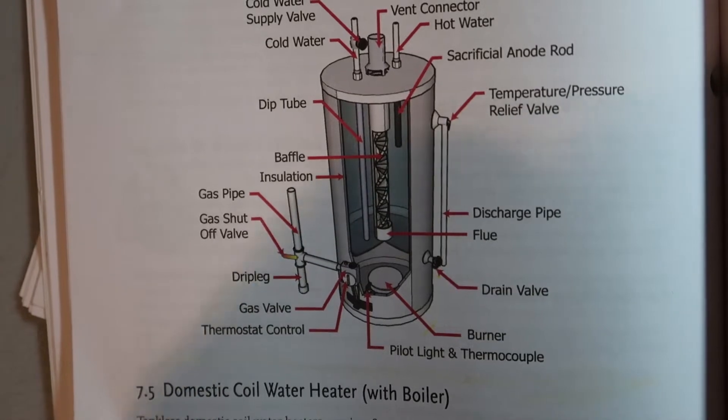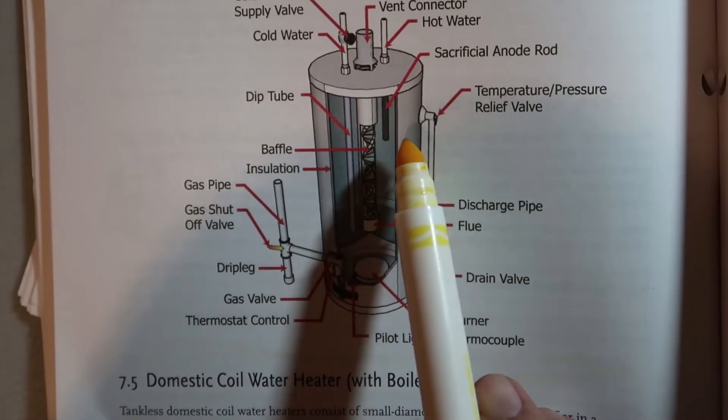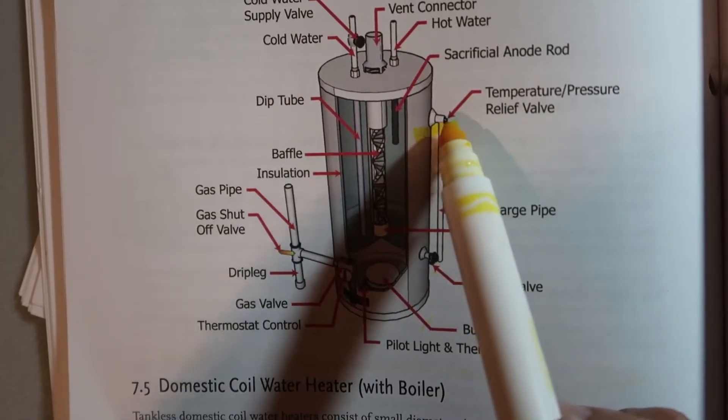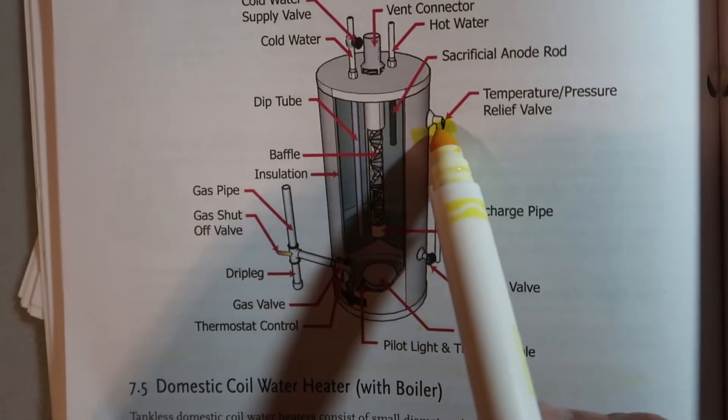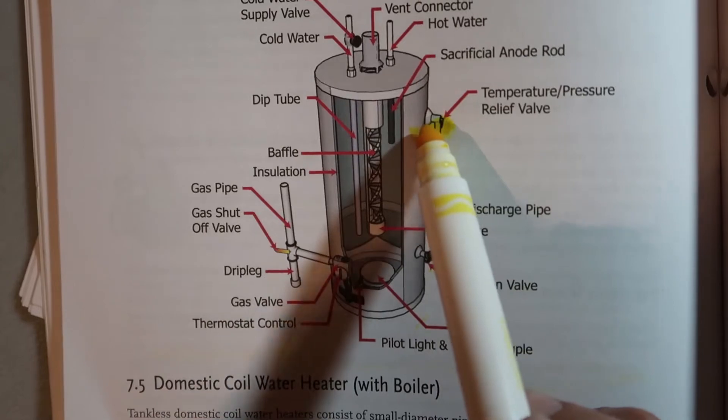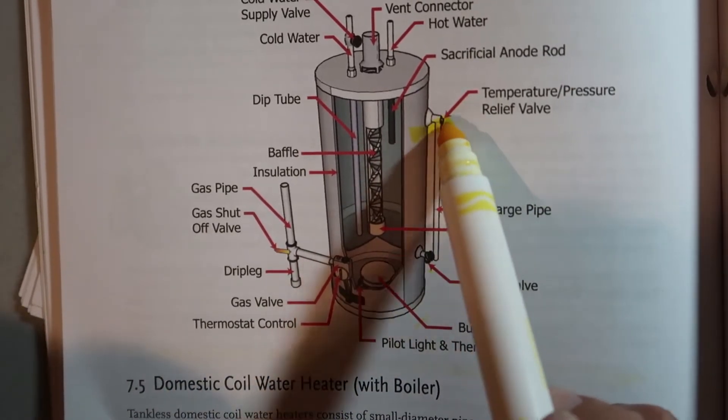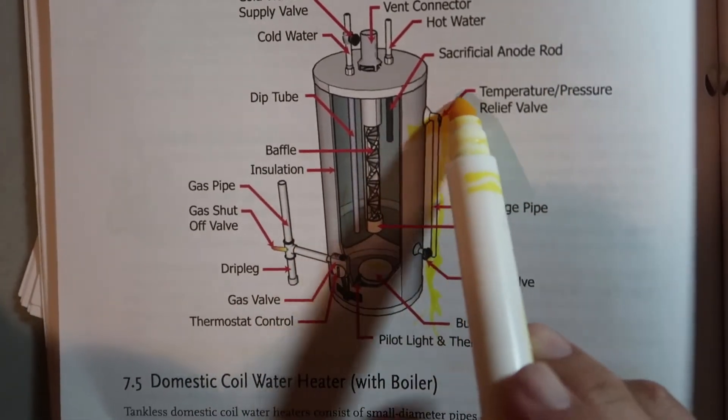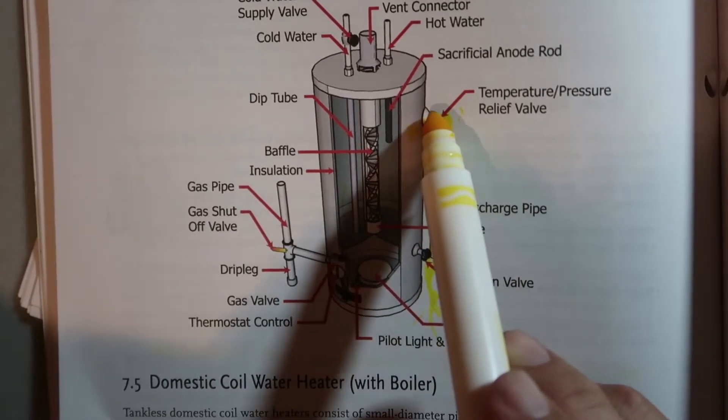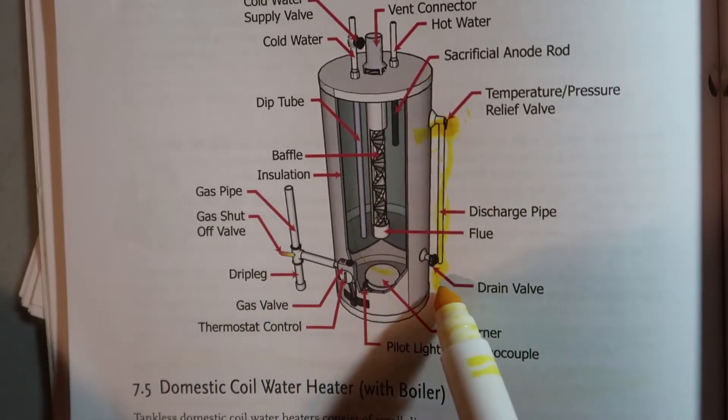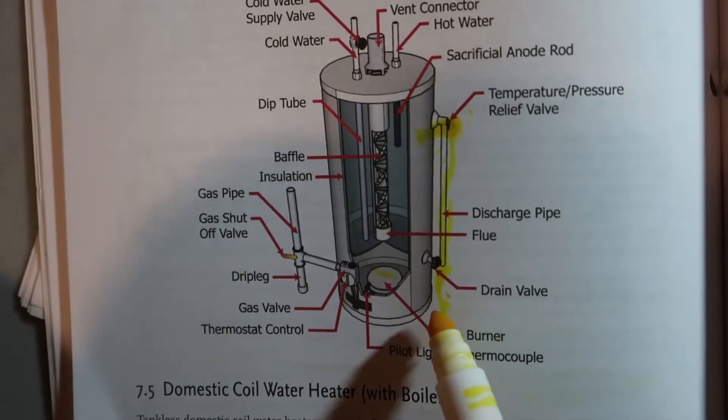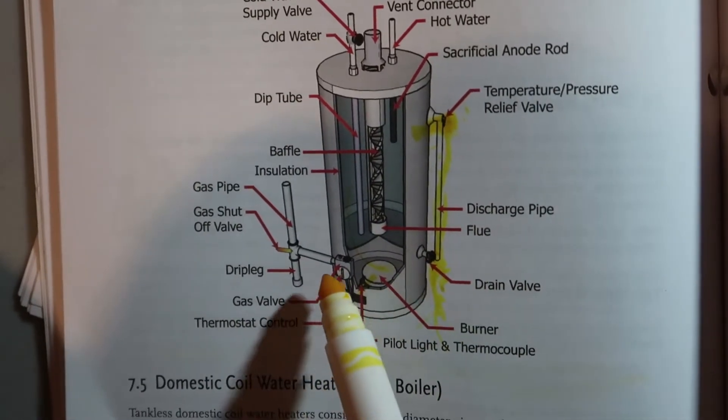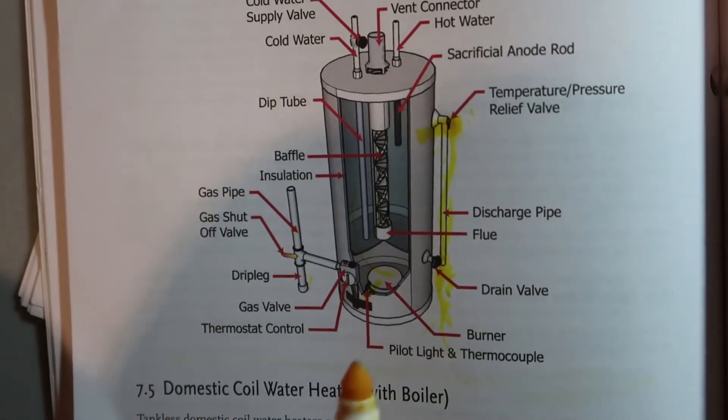Now this is a temperature pressure relief valve or TPR valve right here. This is to keep your water heater from becoming a bomb basically. There's a spring there and if the pressure gets above 150 psi, pounds per square inch, or 220 degrees, that spring will depress and this will leak out, but it'll keep that from blowing up. Again, temperature pressure relief valve. Over time though, sometimes they'll just start leaking and at that point they need to be replaced. Fortunately they're not that expensive. So we're going to check for leaks of the TPR valve, make sure there's no leaks around here, corrosion here, any corrosion, gas leaks here.